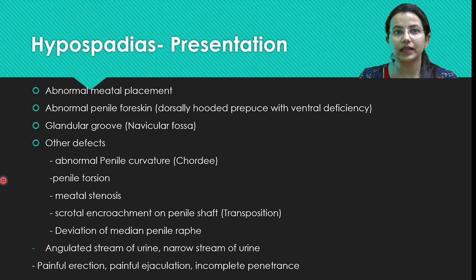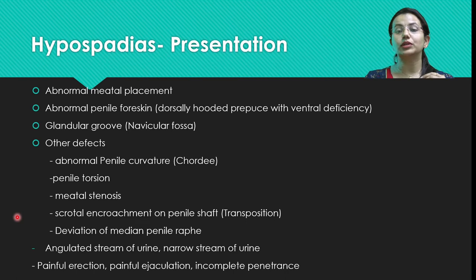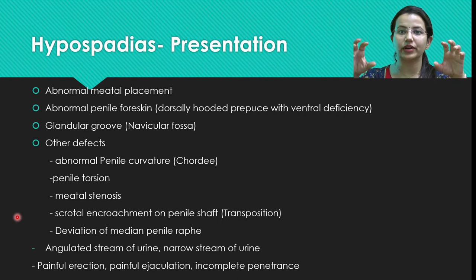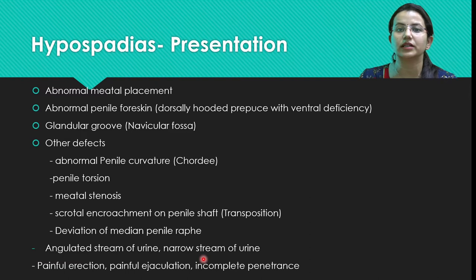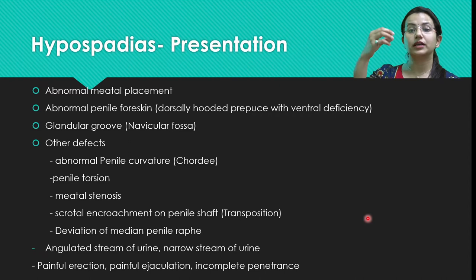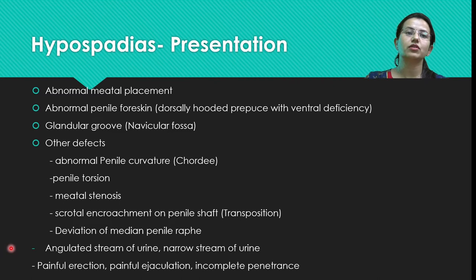Other features include penile torsion, meatal stenosis, and transposition wherein the scrotum encroaches onto the penile shaft, giving the appearance as if the penis is arising from beneath the scrotum. Deviation of the median penile raphe may be seen. An angulated or narrow urinary stream may be the presenting complaint when there is penile torsion or meatal stenosis. In adults or adolescents, complaints may include painful erection, painful ejaculation, or incomplete penetration during coitus.